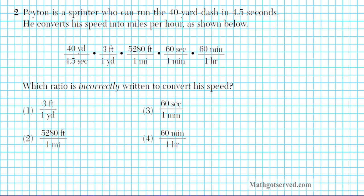Let's take a look at problem number 2. It says Payton is a sprinter who can run the 40 yard dash in 4.5 seconds. He converts his speed into miles per hour as shown below. Which ratio is incorrectly written to convert his speed? So we're looking for the incorrect one. For problems like this, you have to be really careful to watch out for the words that I italicize. In this case, we're looking for what is wrong, which is incorrect.